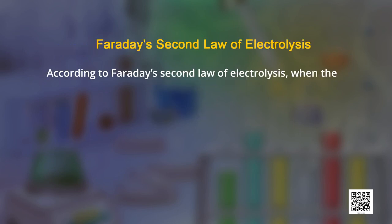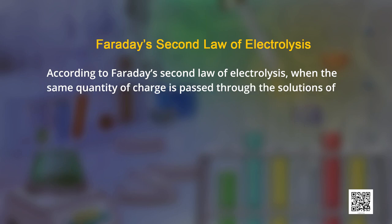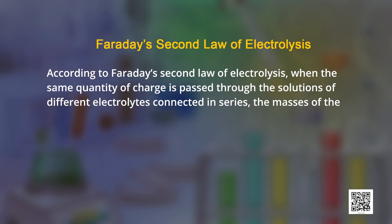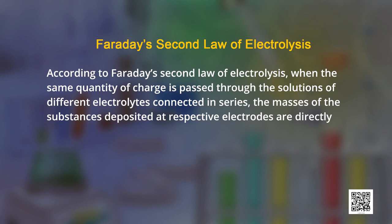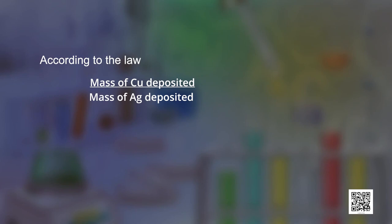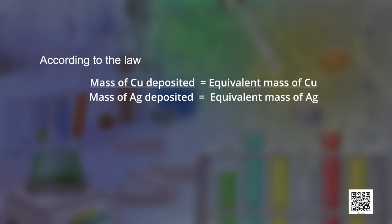According to Faraday's second law of electrolysis, when the same quantity of charge is passed through the solutions of different electrolytes connected in series, the masses of the substances deposited at respective electrodes are directly proportional to their equivalent masses. For example, when the same quantity of charge is passed through aqueous solutions of copper sulphate and silver nitrate in two different cells in series, copper and silver get deposited at the cathode, and their masses are equivalent to their equivalent masses.